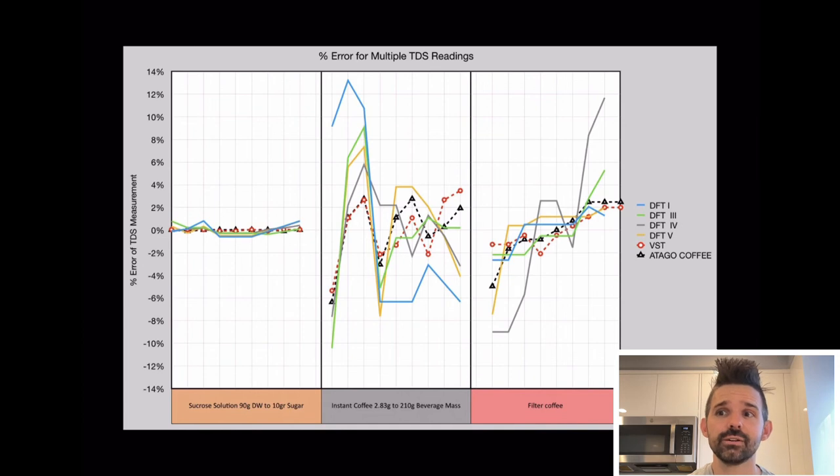But as you can see, even Atago and VST, they have, depending on the sample, one to six percent error rate. So I think even for reading TDS on filter coffee is very challenging. And in my other test results, I found that TDS often behaves really weird around one percent or below one percent TDS, where it doesn't have this connection, this linear connection that TDS does at higher readings with ground truth.